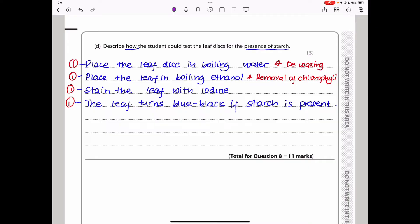Describe how the student could test the leaf disc for the presence of starch. If you're testing for presence of starch, you can place the leaf disc in boiling water. This causes the wax to get off or this is called a de-waxing method. Then we place the leaf in boiling ethanol. This removes chlorophyll. Then you can put it on a white tile and stain it with iodine. If the leaf turns blue-black, then starch is going to be present. This brings us to the end of question eight.